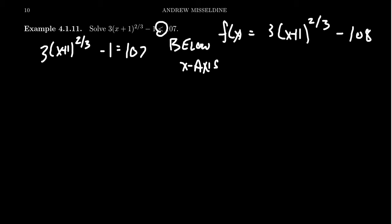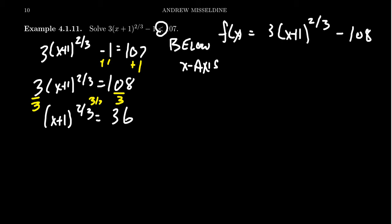But let's solve this equation here to find the marker. I'm going to add 1 to both sides, so we get 3 times x plus 1 to the 2 thirds. That's equal to 108. We're going to divide both sides by 3, so we get x plus 1 to the 2 thirds is equal to 108 divided by 3, which is equal to 36. And then we divided both sides by 3 here, we added 1, both sides here. And this side, we're going to take the 3 halves power.